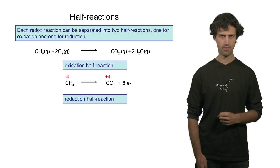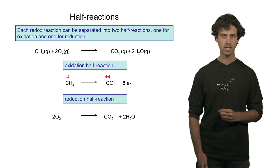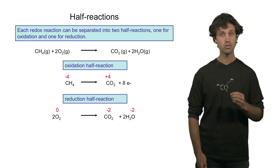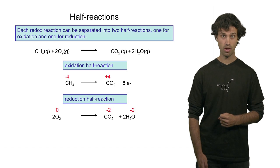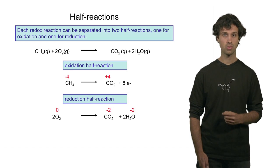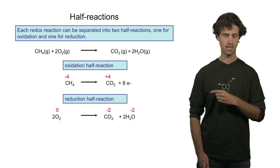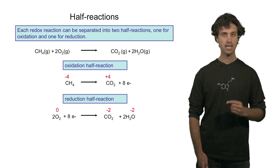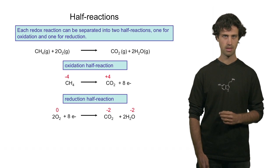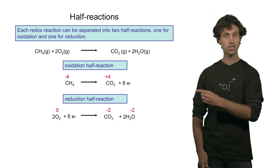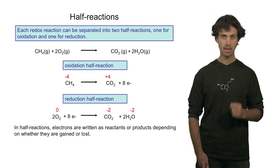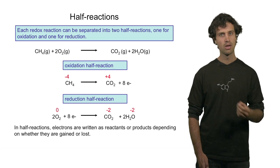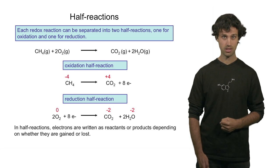Let us move to the reduction half reaction. The oxidizing agent is oxygen, which is being reduced, because the oxidation state changes from 0 to minus 2 for each oxygen atom. There is a total of 4 oxygen atoms involved in this process, which means 4 times minus 2 equals 8 electrons that are being consumed in this step. We can write those 8 electrons explicitly in the equation as a reactant. Electrons can be written explicitly as reactants or products, depending on whether electrons are being gained or lost.